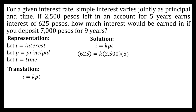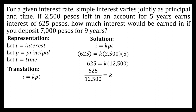Simplifying by multiplying 2500 and 5, we get 625 is equal to K times 12,500. Dividing both sides by 12,500, we have 625 over 12,500 equals K. Simplifying, our constant of variation is equal to 1 over 20.